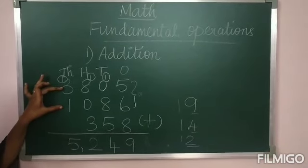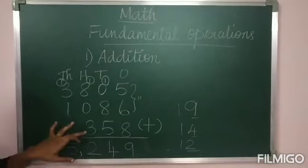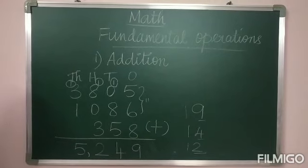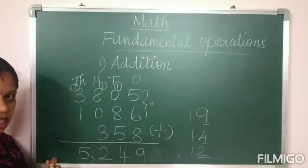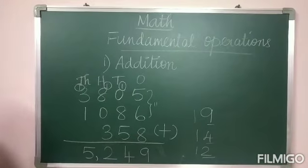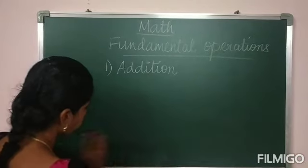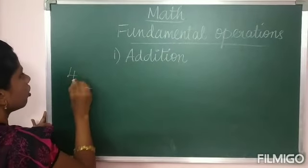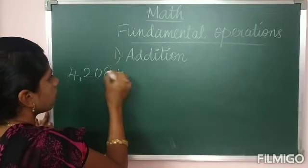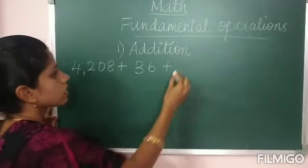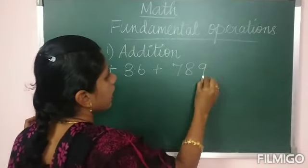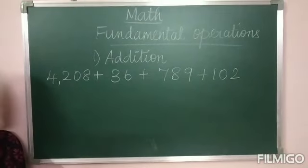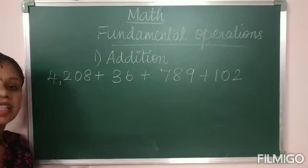Here you have two numbers that are 4 digits and one that is 3 digits. While writing I will tell you how to arrange the numbers and add. Suppose they have given 4208 plus 36 plus 789 plus 102. You have to arrange all these numbers in vertical order and then add. Before writing, write the place values.